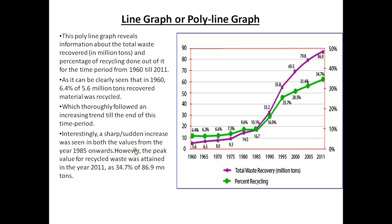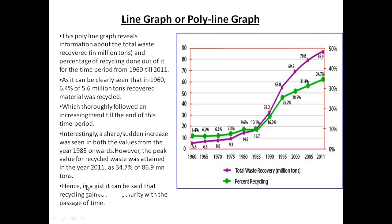Now for the contrasting tone, use connectors like 'however' or 'whereas.' For example: 'However, the peak value for recycled waste was attained in the year 2011, as 34.7% of 86.9 million tons was recycled.' The minimum values were covered earlier and the maximum ones are covered here. To conclude, use words like 'hence' or 'thus' — for example: 'Hence, in a gist, it can be said that recycling gained its popularity with the passage of time.'